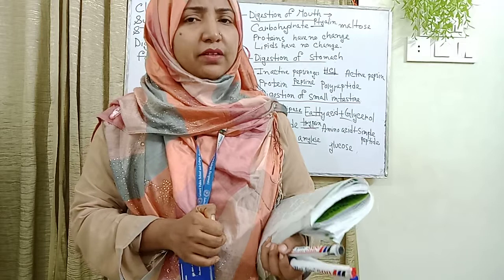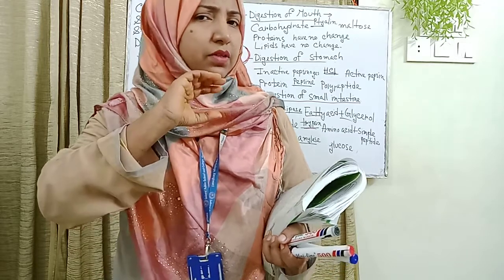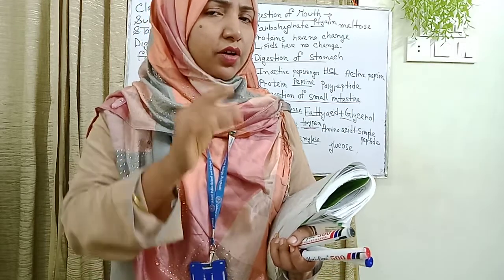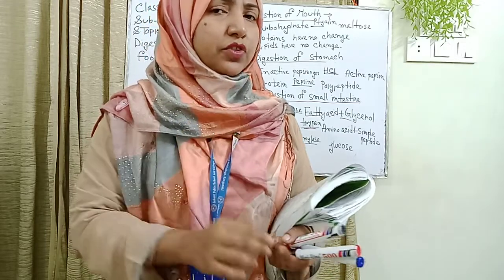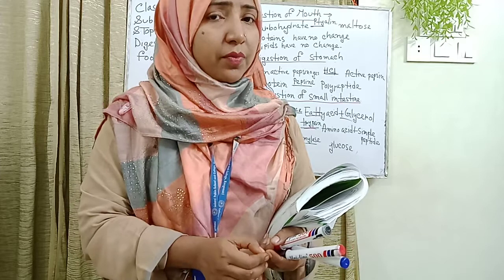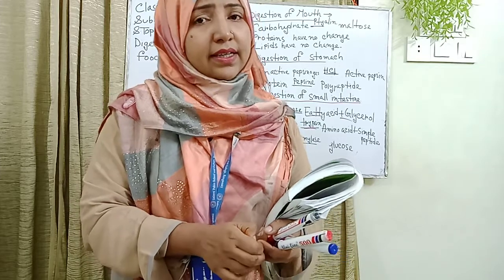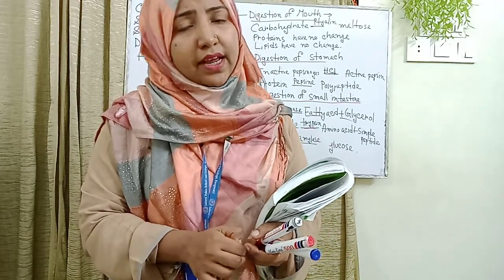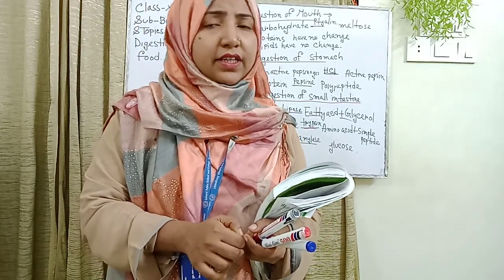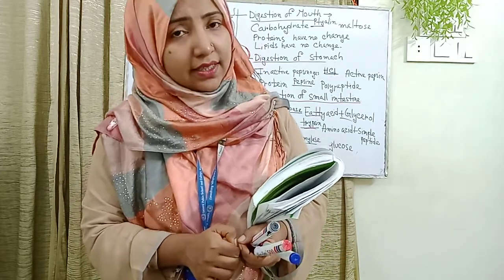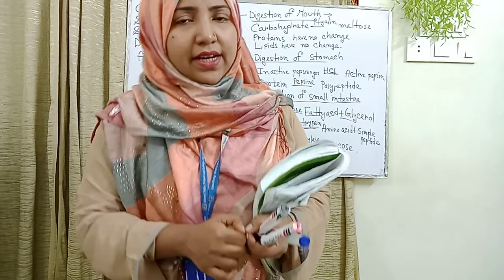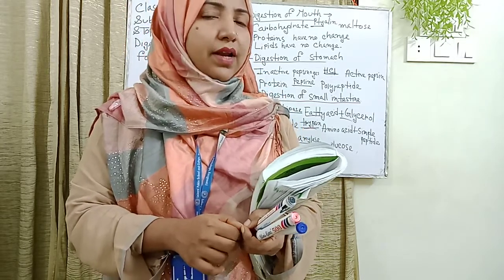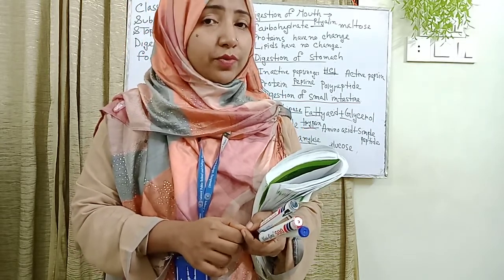The food is first made into a small and simple soluble form, and then it diffuses across the cell membrane and enters into the cell. Finally, it is absorbed by the blood.